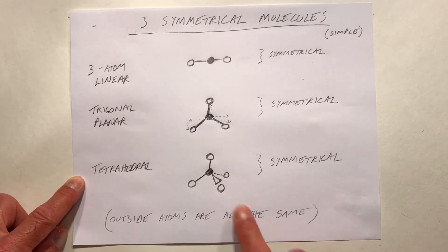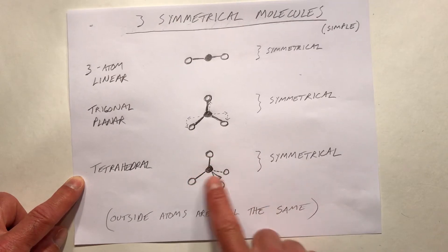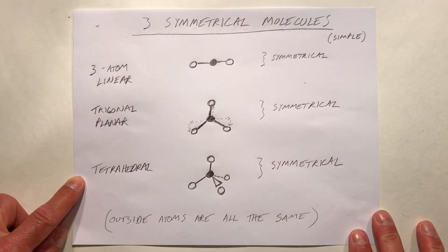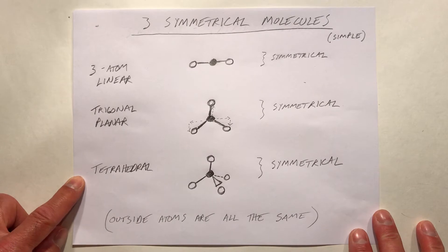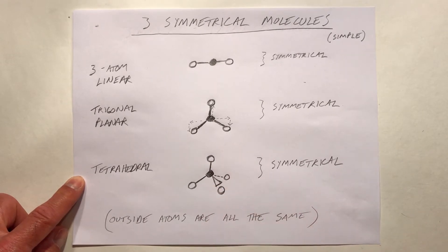If you were to make a pyramid with four sides on it, in Greek we would call that a tetrahedron. So this is a tetrahedral structure.